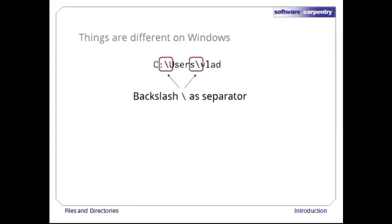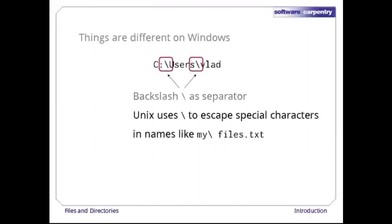Instead of a forward slash, Windows uses backslash to separate the names in a path. This causes headaches because Unix uses backslash to escape special characters. For example, if you want to put a space in a file name, you would write it as backslash-space. Please don't ever do this, though — if you put spaces, question marks, and other special characters in file names on Unix, you're likely to confuse the shell and a lot of other tools.